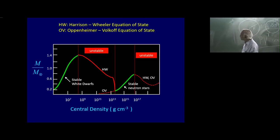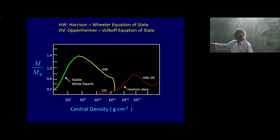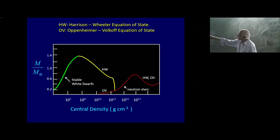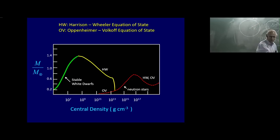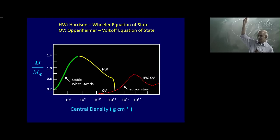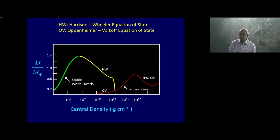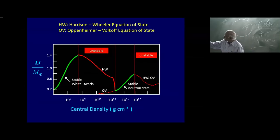In the Oppenheimer–Volkov theory there was no minimum mass for a neutron star, just as in Chandrasekhar's theory there was no minimum mass for a white dwarf — the radius as a function of mass goes as m to the power −1/3, so you could have as small a mass and as large a radius as you like. But if you do things properly with the Harrison–Wheeler equation of state, you notice there is also a minimum mass.